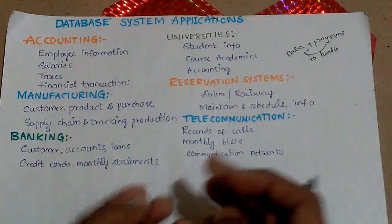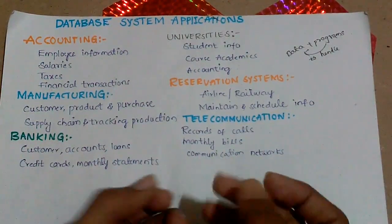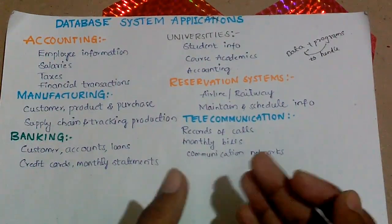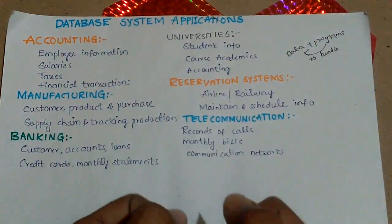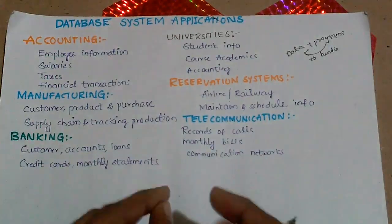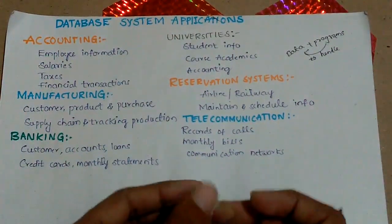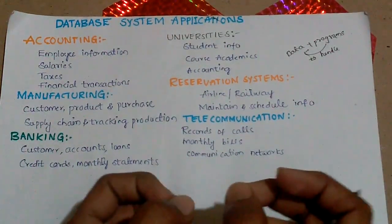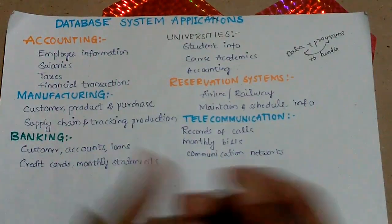We also need to track the supply chain — monitoring supply and demand — and track production. We need to have control and a grip on what is going on, maintaining data for particular reporting. All such data is required in the manufacturing industry, so to collect this huge amount of data we use DBMS.